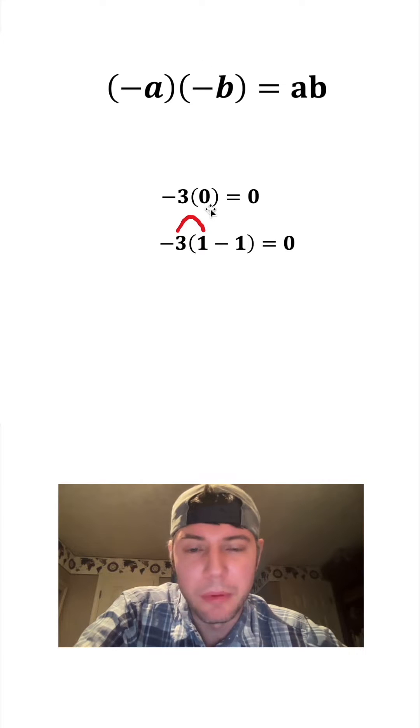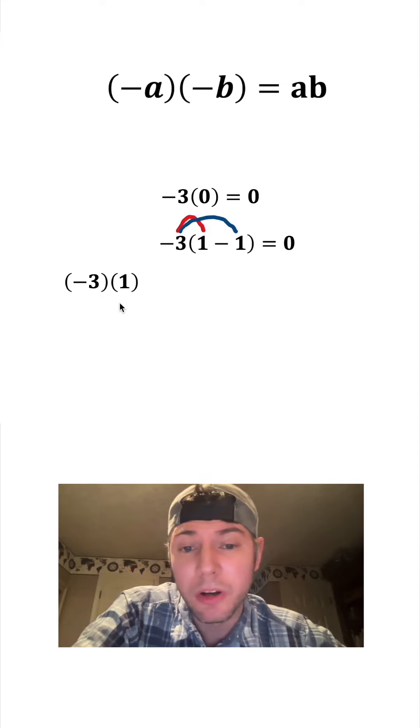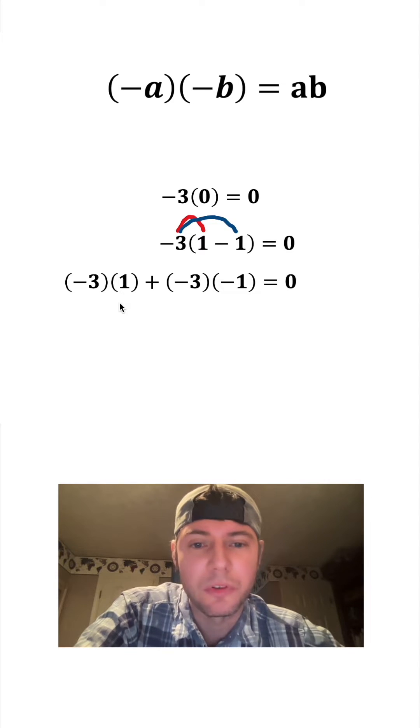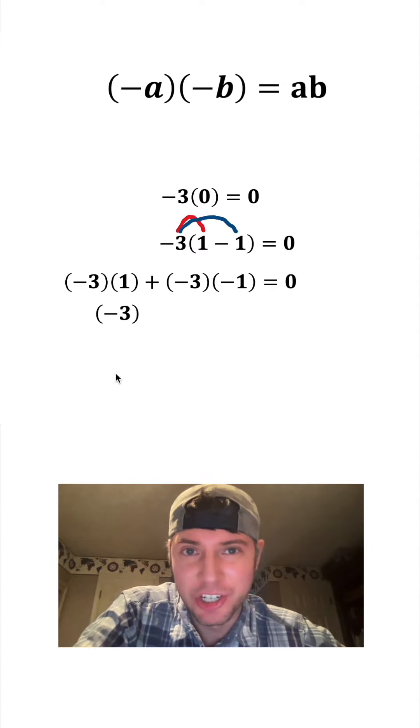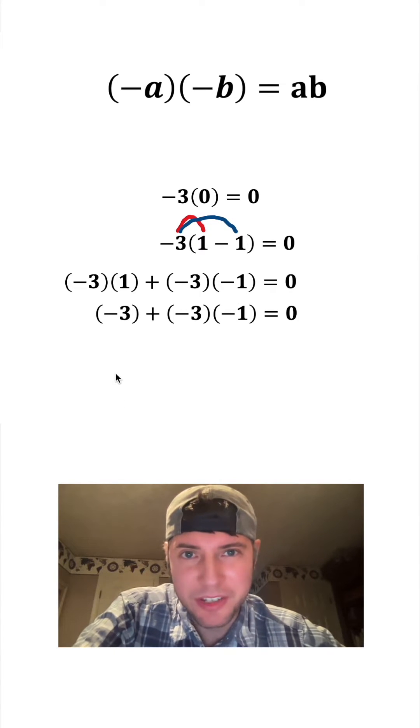Then I'm going to do distribution just like we did up above. Negative 3 times 1 is negative 3 times 1. Negative 3 times negative 1 is negative 3 times negative 1. And this will still be equal to 0. Now, negative 3 times 1, but 1 is the multiplicative identity, so this is still just negative 3. And then we can bring down the rest of this stuff.